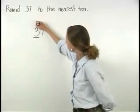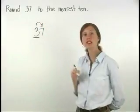Next, look at the digit to the right of the rounding place, which in this case is 7.